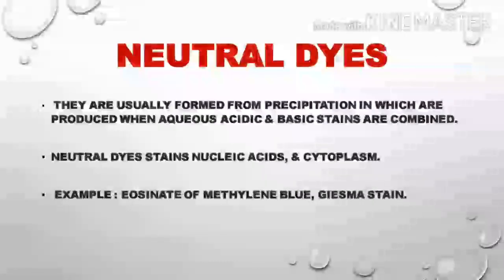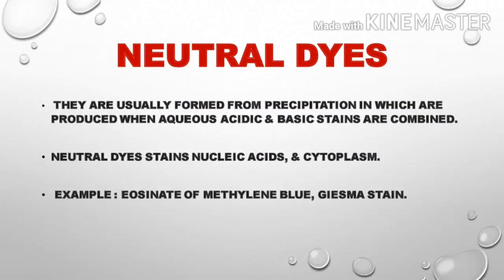Neutral dyes are usually formed by precipitation, produced when aqueous acidic and basic stains are combined. Neutral dyes stain nucleic acid and cytoplasm. Examples include eosinates of methylene blue and Giemsa stain.